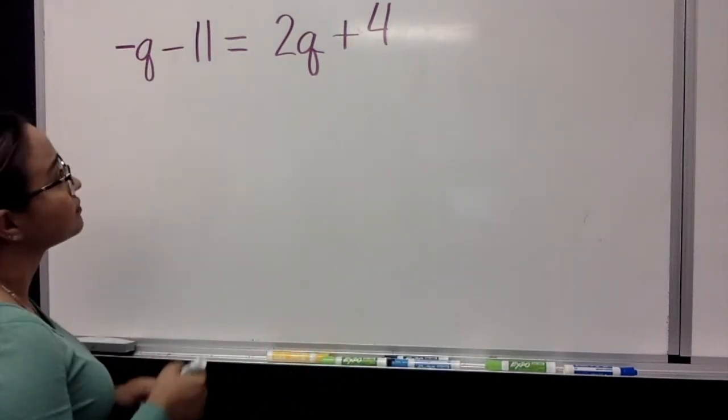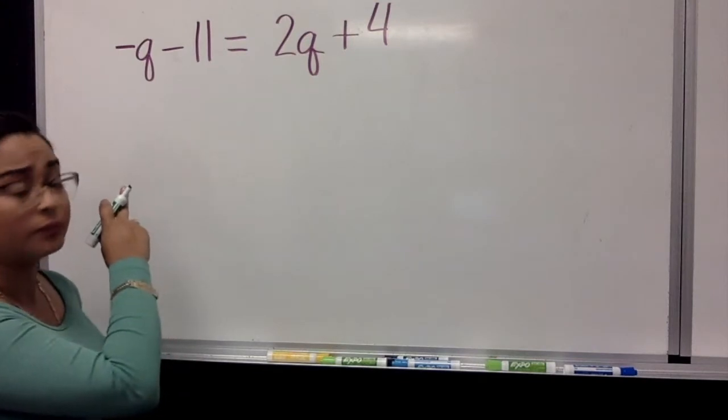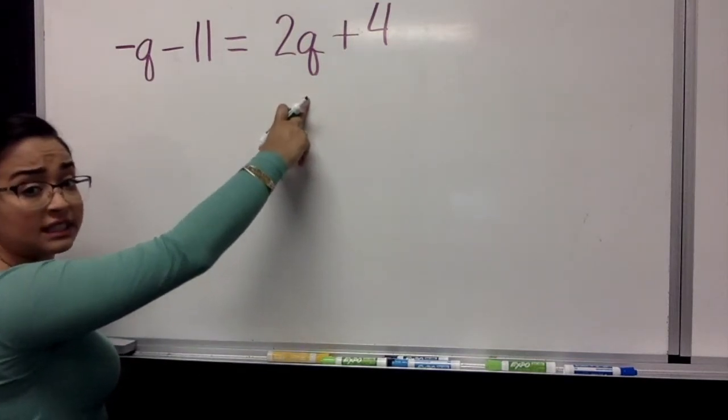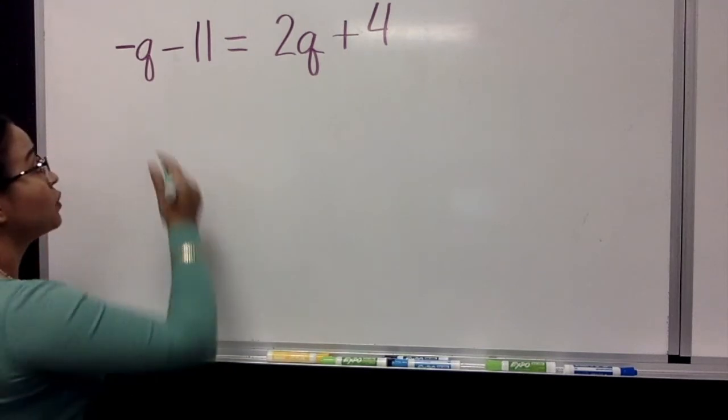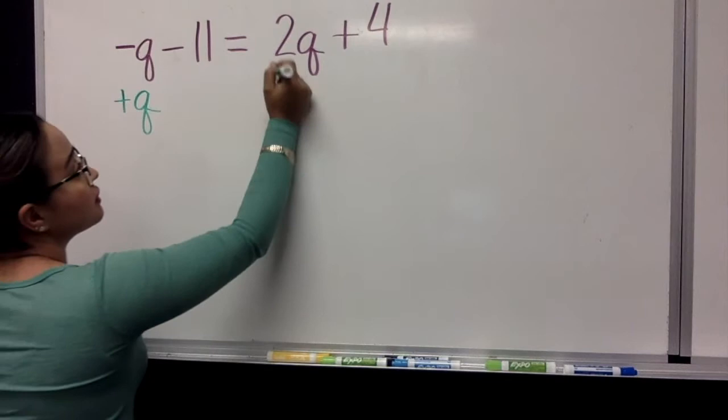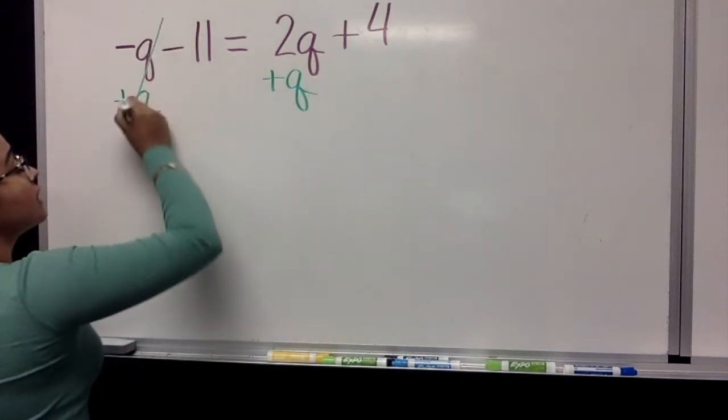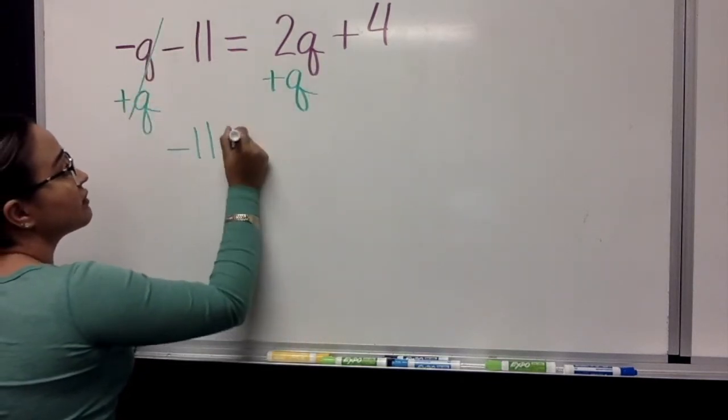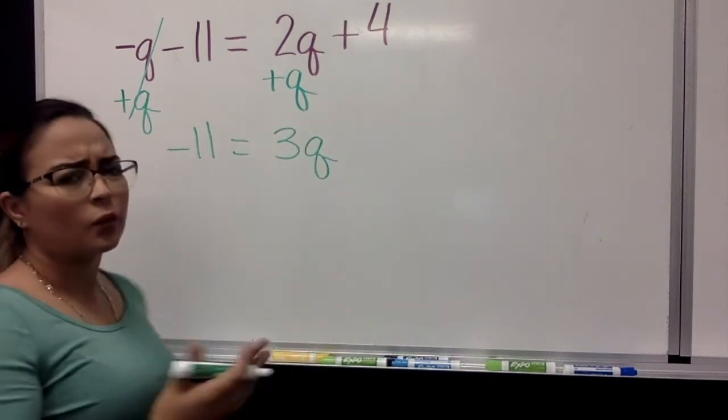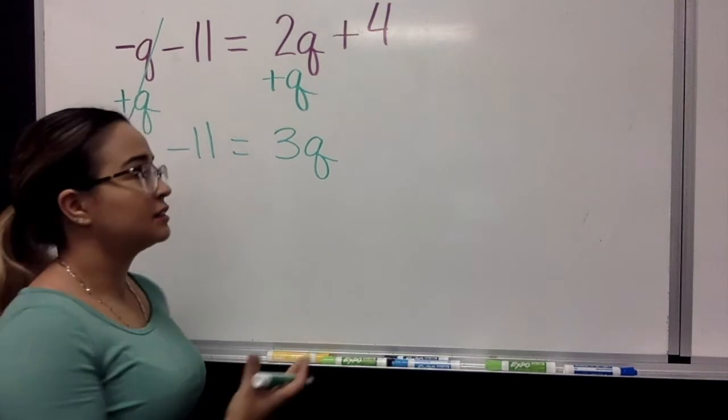Let's see. Let's start with the Q. We have negative Q on this side and positive 2Q on this side. What I'm going to do is I'm going to add Q to both sides. Here it cancels out. We are left with negative 11 equals 3Q. Why 3Q if there's just a Q?